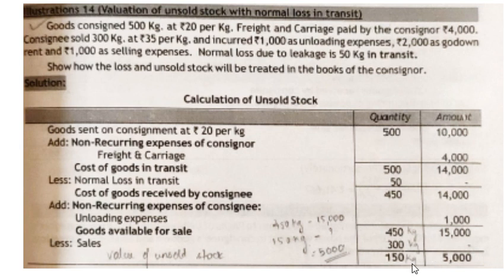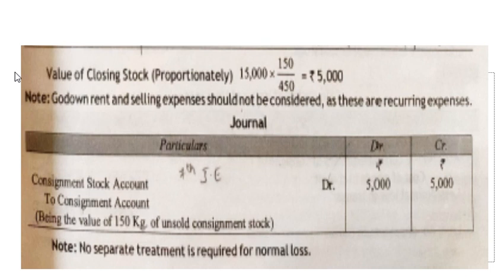So the cross multiplication is 15,000 into 150 divided by 450 which gives 5,000 — the value of closing stock proportionately. Note: godown rent and selling expenses should not be considered as these are recurring expenses. A journal entry is passed: consignment account debtor to consignment stock account, being value of 150 kg of unsold consignment stock at 5,000.